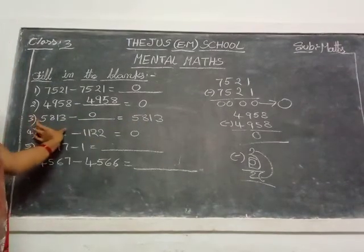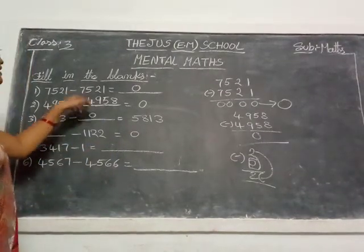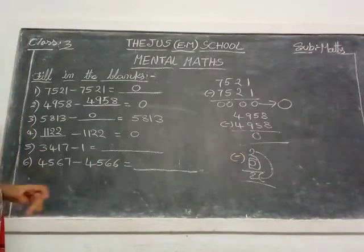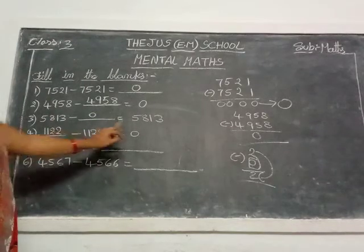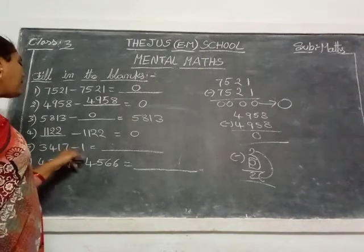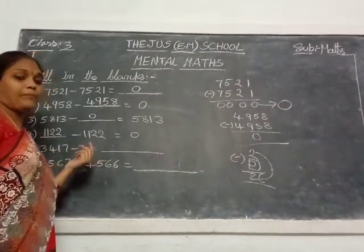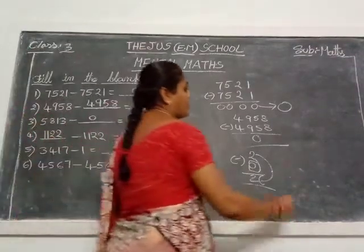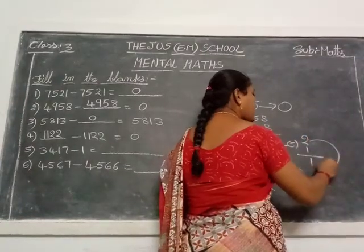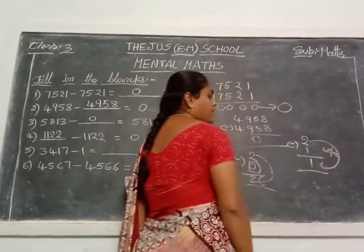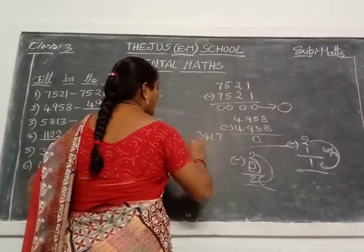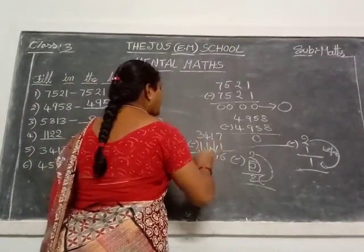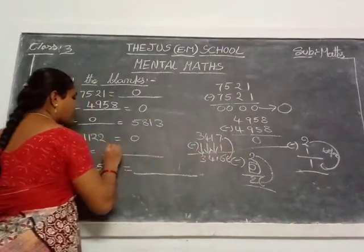Okay, next. What is the first number? Because the answer is 0 — same as the 1st and 2nd properties. You subtract these two numbers because the answer is also 0. A number subtracted from the same number becomes 0. Next: 3417 minus 1. Already explained this property — 1 is subtracted from any number, the answer is the predecessor. 2 minus 1 is 1, so 2's predecessor is 1. So 3417 minus 1: the predecessor of 7 is 6, so the answer is 3416.